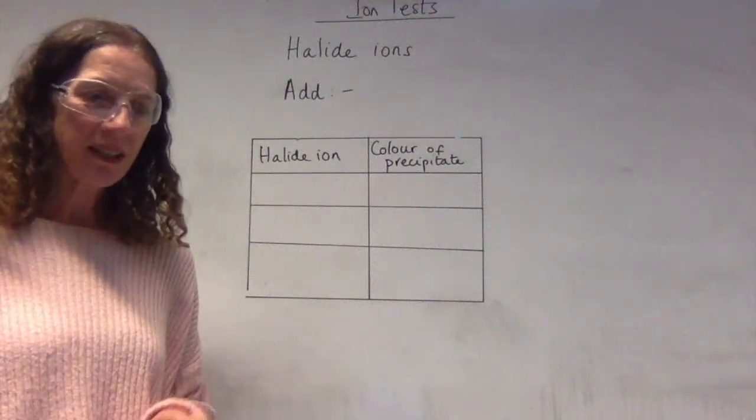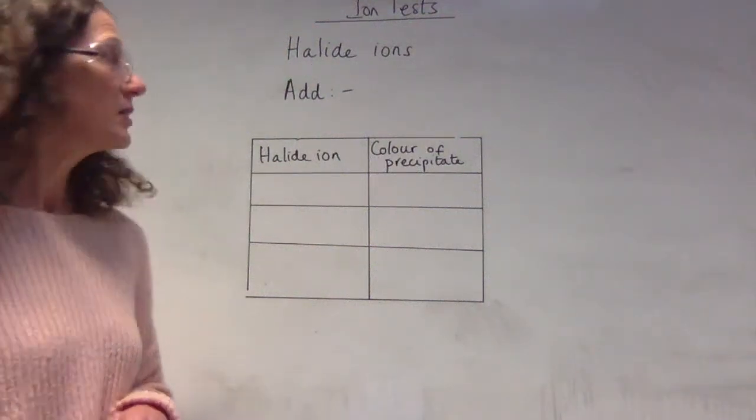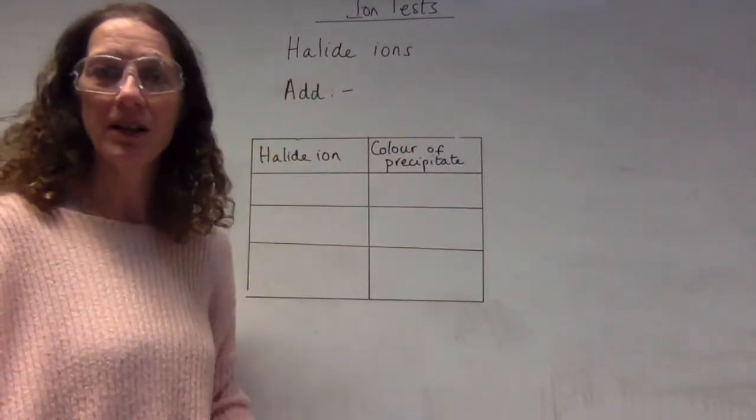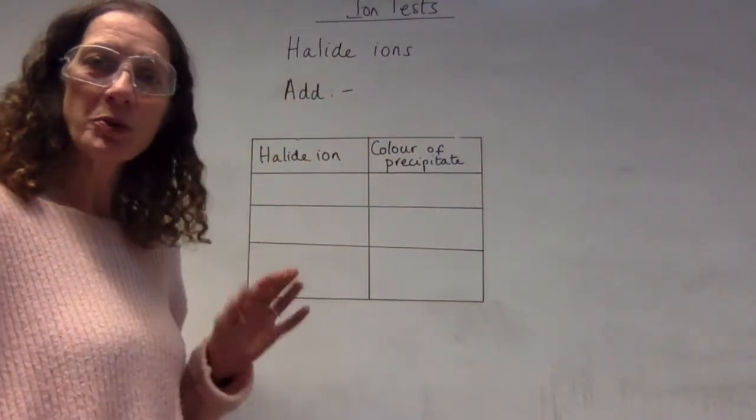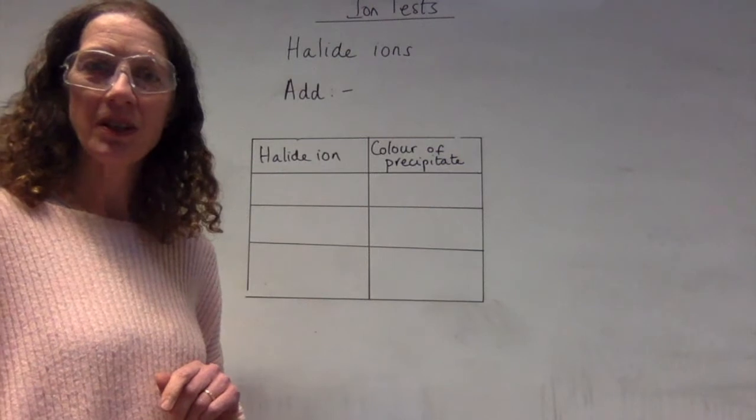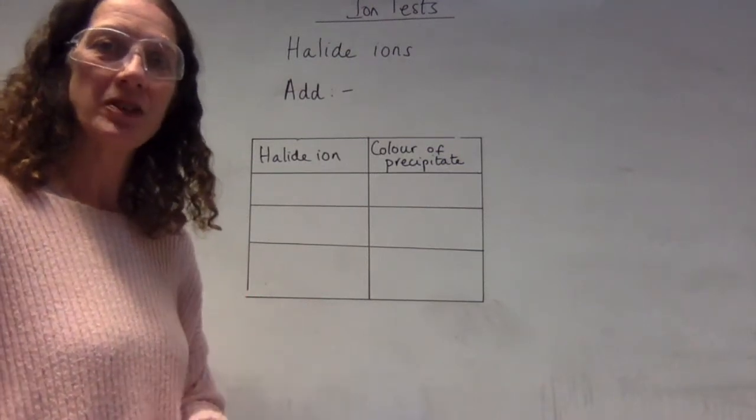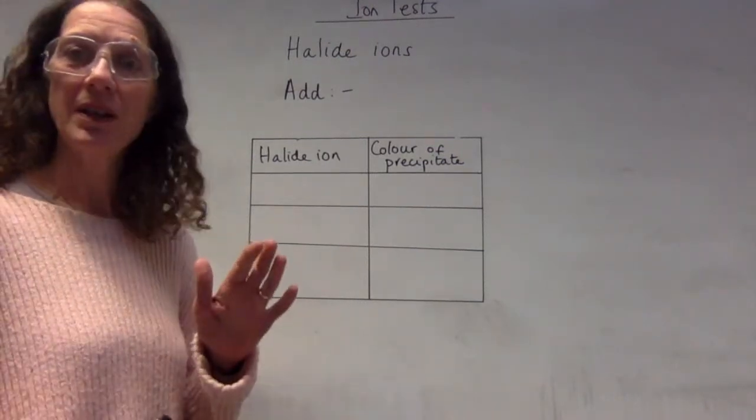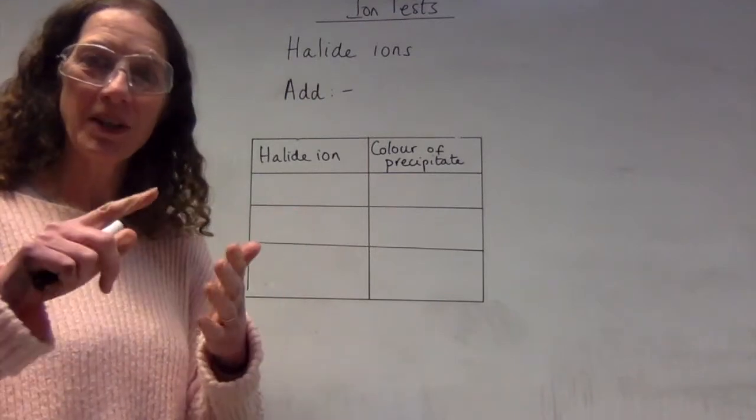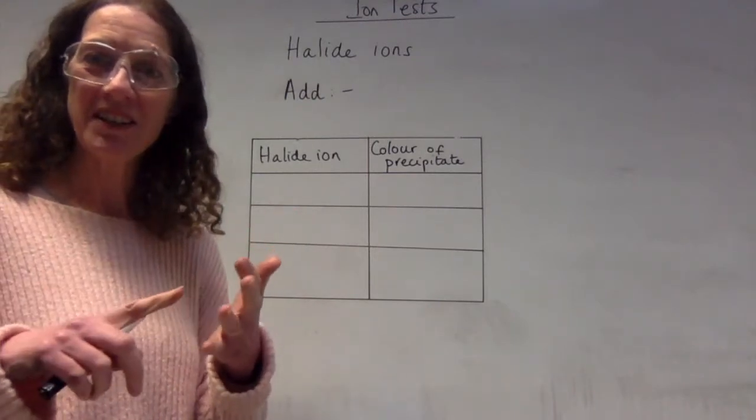I'm going to look at the next ion test which is for the halide ions. First of all, what do we mean by the halide ions? Well, it's those from the halogens, so that will be the fluoride, chloride, bromide, and iodide.